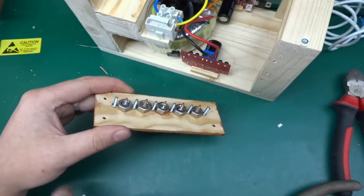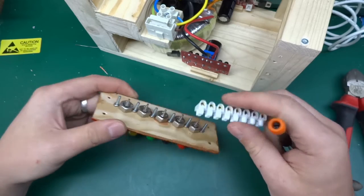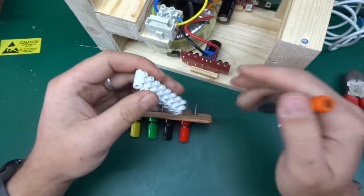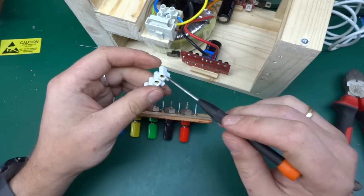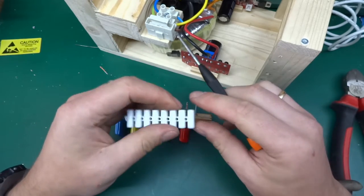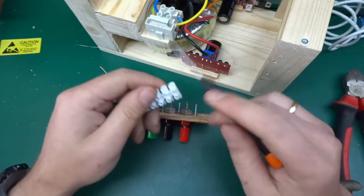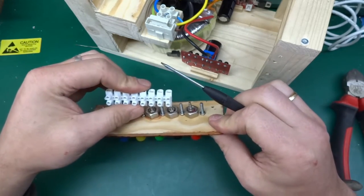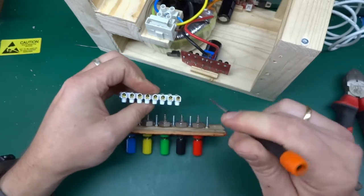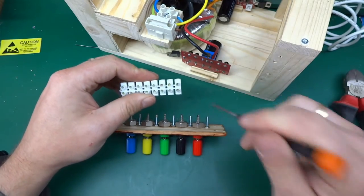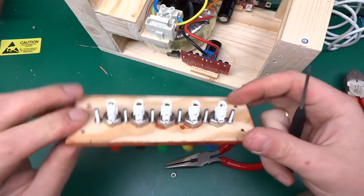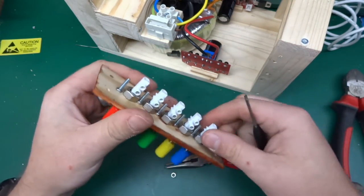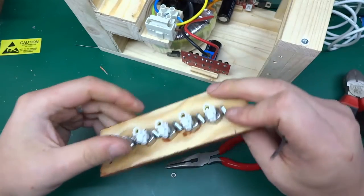What I'm going to use is little brick connectors like this. I'm just going to cut five single ones and attach them. Then I can just poke another wire in here and tighten it up. That will be a convenient way to attach the output cables to this.